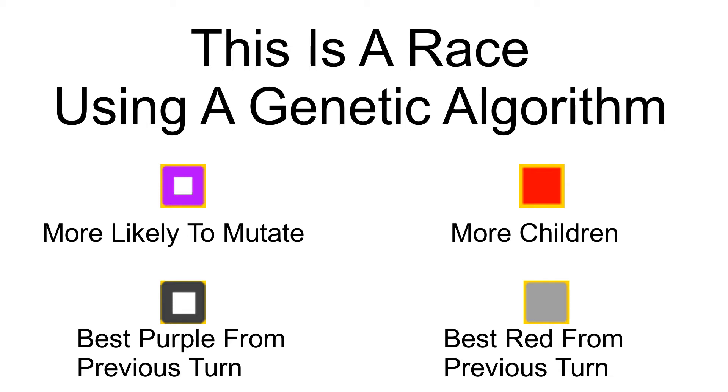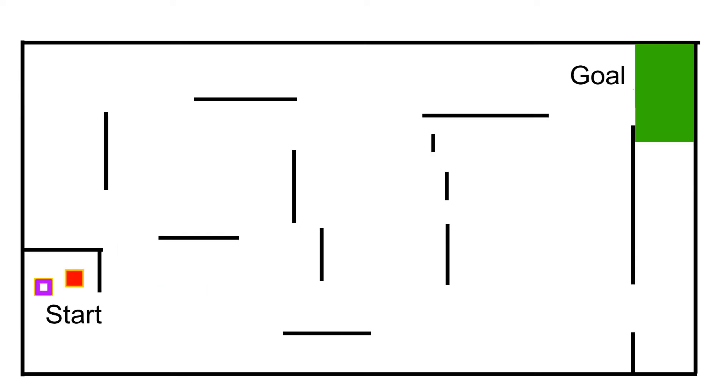This is a race using a genetic algorithm. The purple squares are more likely to mutate and the red squares have more children. We want to see who can get to the goal at the top right first. They start at the bottom left. These blue squares are going to move and try to kill them.